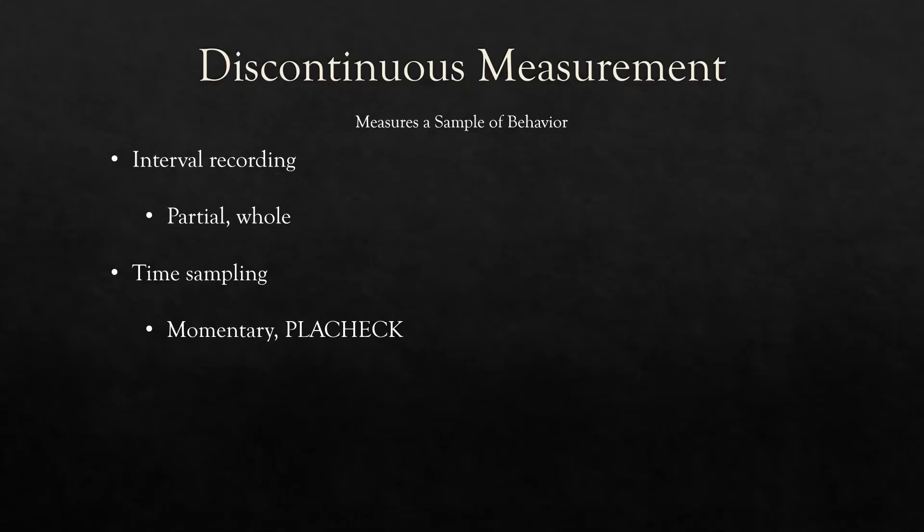Types you need to know: interval recording — partial and whole — and then time sampling: momentary, play check, or planned activity check.